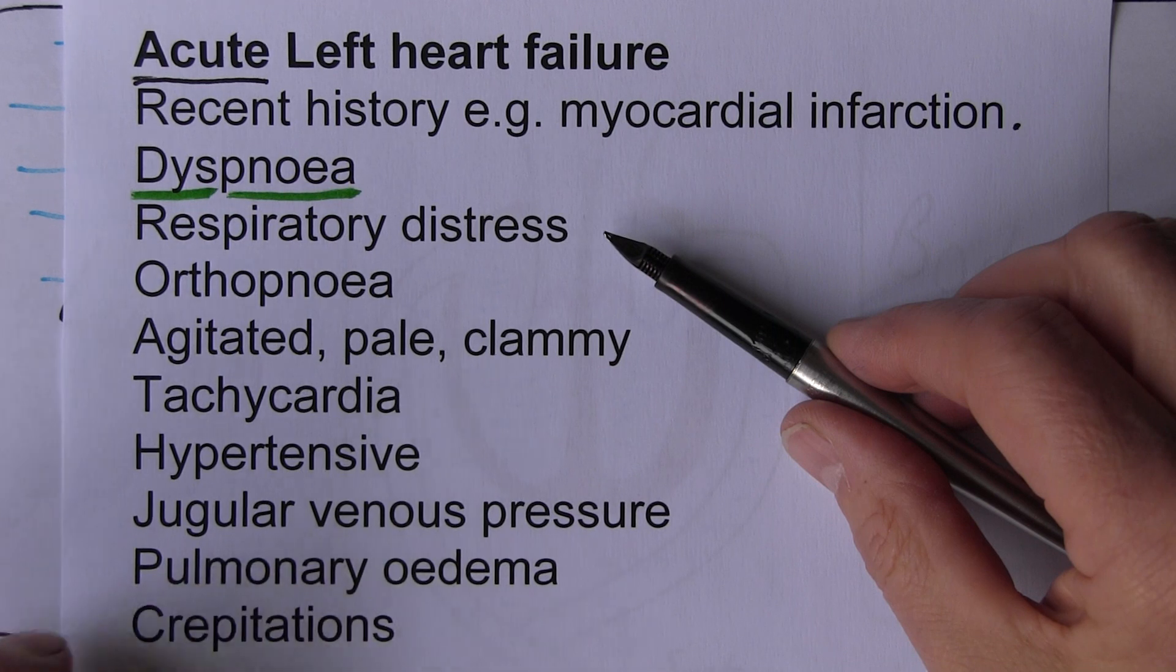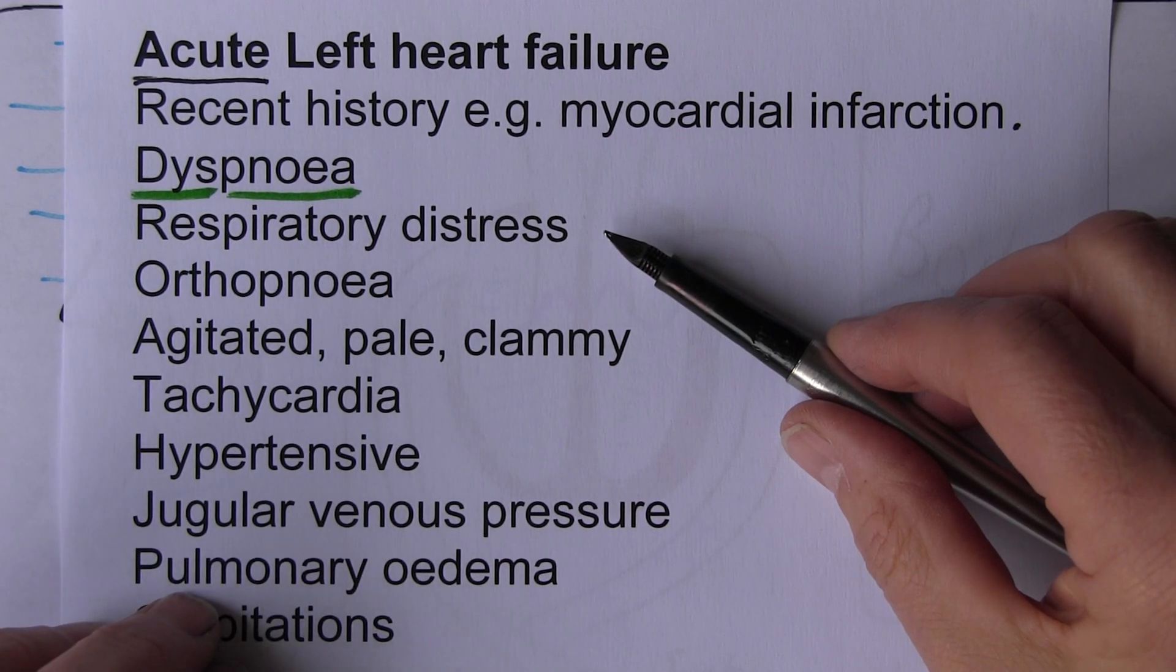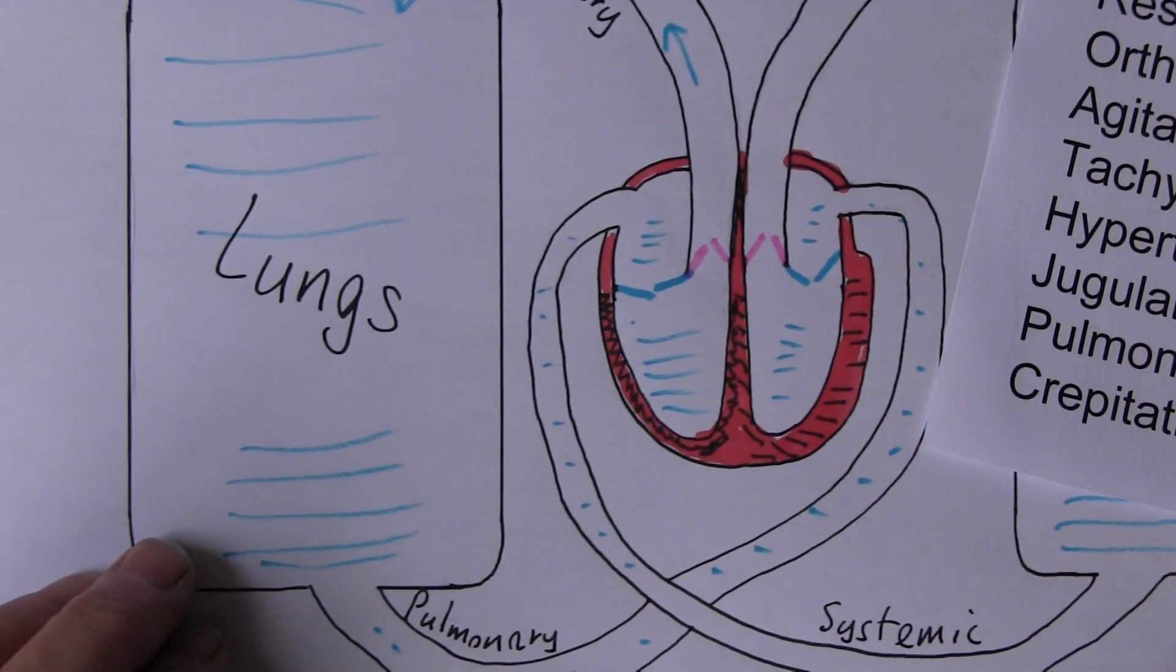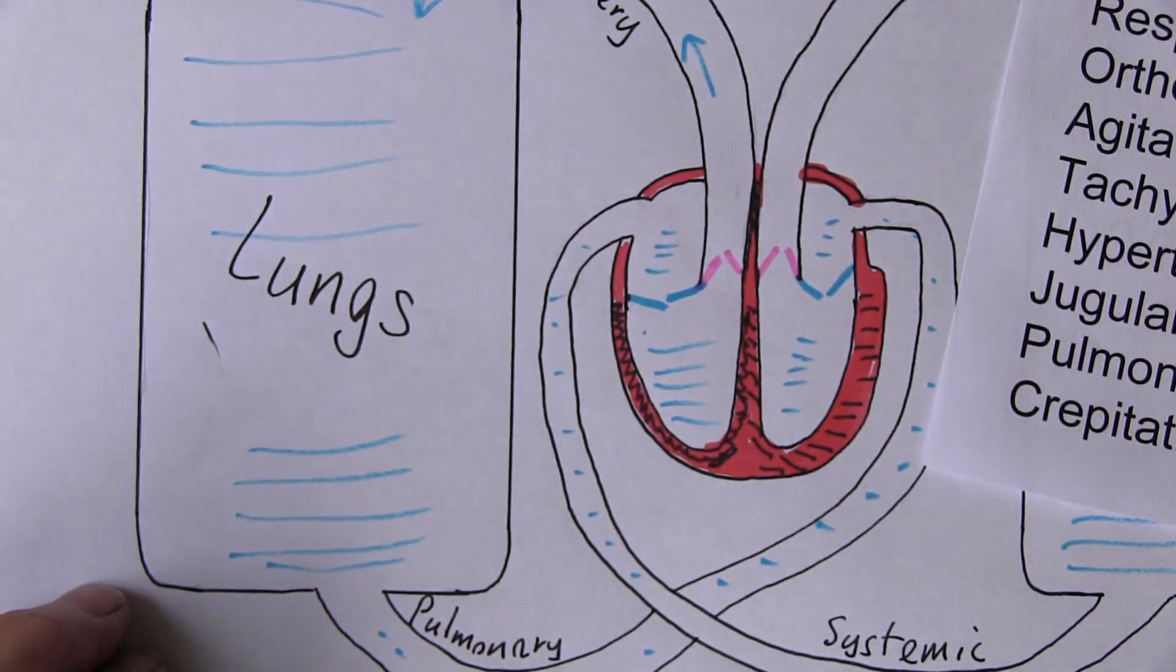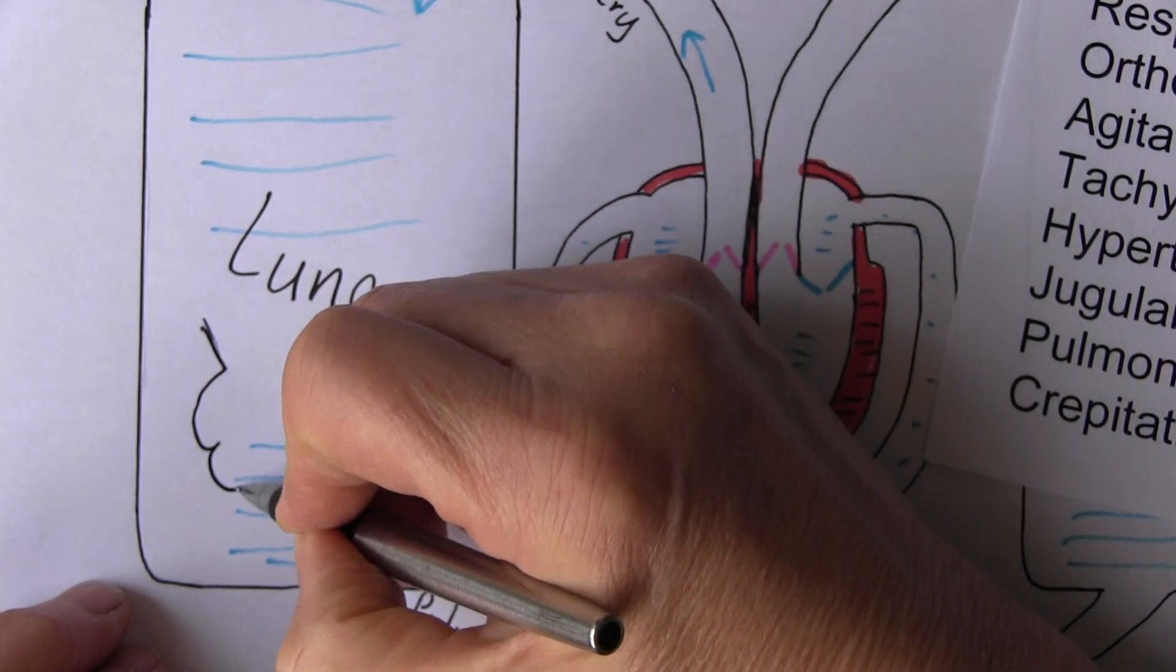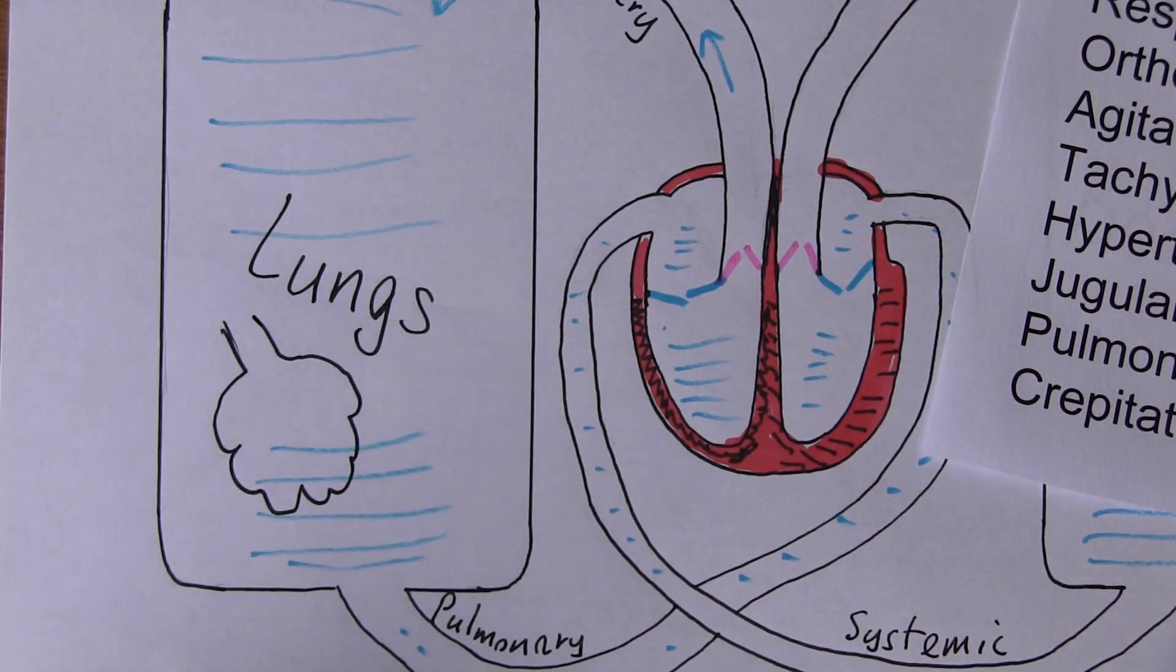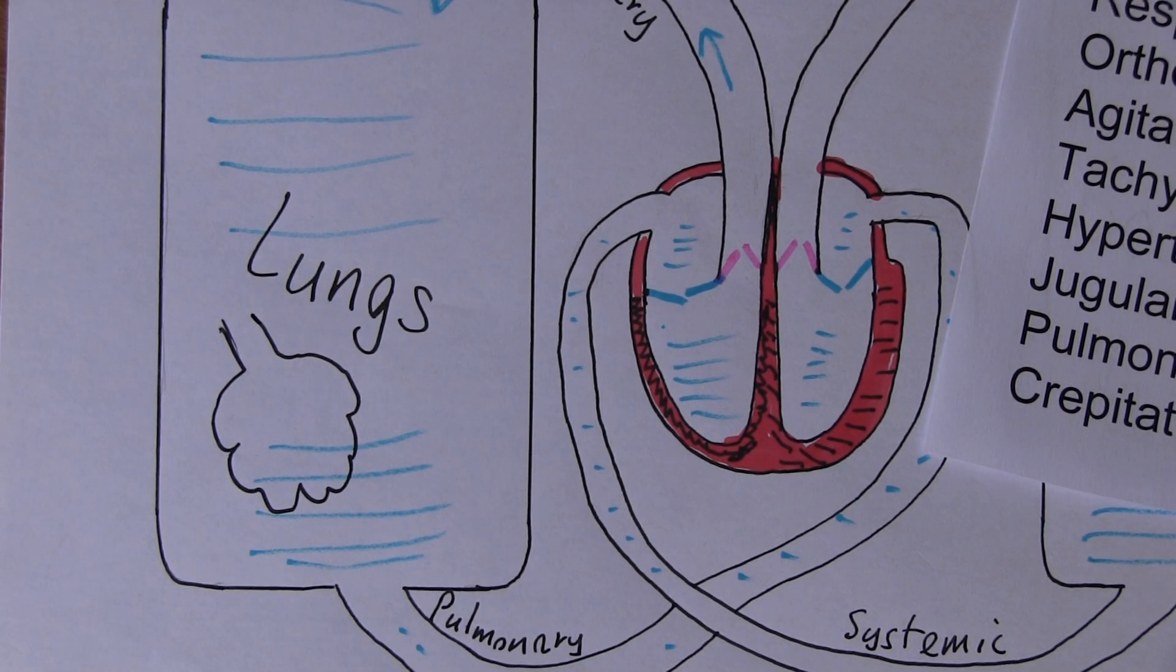You can get pink frothy sputum coming if it's a severe case of acute left heart failure. In the alveoli in the lungs, which are surrounded by lots of little blood vessels, very rich blood supply to the alveoli. The alveoli are basically surrounded in capillaries.